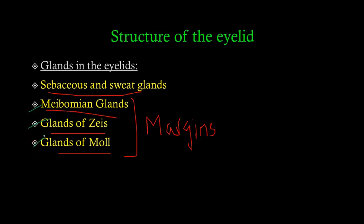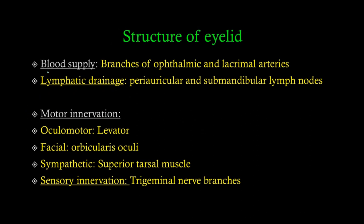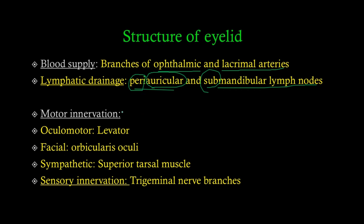Blood supply — not critically important, but for completeness: the eyelid is supplied by branches of the ophthalmic and lacrimal arteries. Lymphatic drainage goes to the periauricular nodes — 'peri' meaning around the ear — and the submandibular nodes, which are below the mandible.